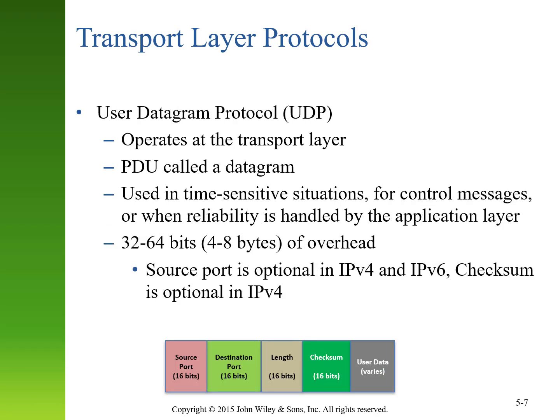There are alternative transport layer protocols still used today. One commonly used is the User Datagram Protocol, which operates at the transport layer and whose data unit is called a datagram. It's used in situations where information is time-sensitive, for simple control messages, or when reliability is handled by the application layer. UDP overhead is much smaller — only 4 to 8 bytes — and the source port is potentially optional in both IPv4 and IPv6. Checksum is even optional in older IPv4. A homework exercise explores both TCP and UDP in more detail.